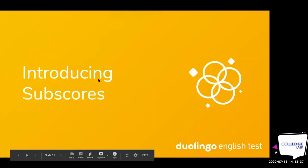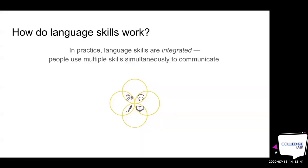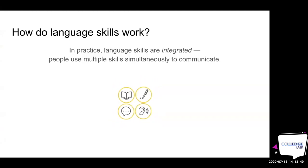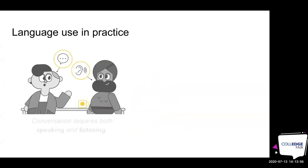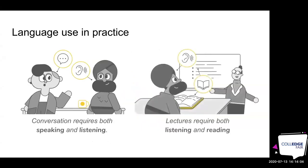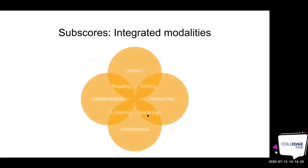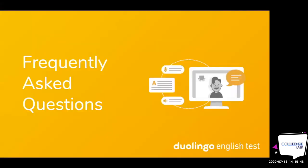Just recently, we added subscores — an exciting advancement. Our subscores are a little different from traditional speaking, writing, reading, and listening because we look at what's known as an integrated modality — the ways you use multiple skills simultaneously to communicate. Conversation requires both speaking and listening. Lectures require both listening and reading. Our subscores are: Literacy (reading and writing), Production (writing and speaking), Conversation (listening and speaking), and Comprehension (listening and reading). Some universities will have cutoff requirements for these subscores.